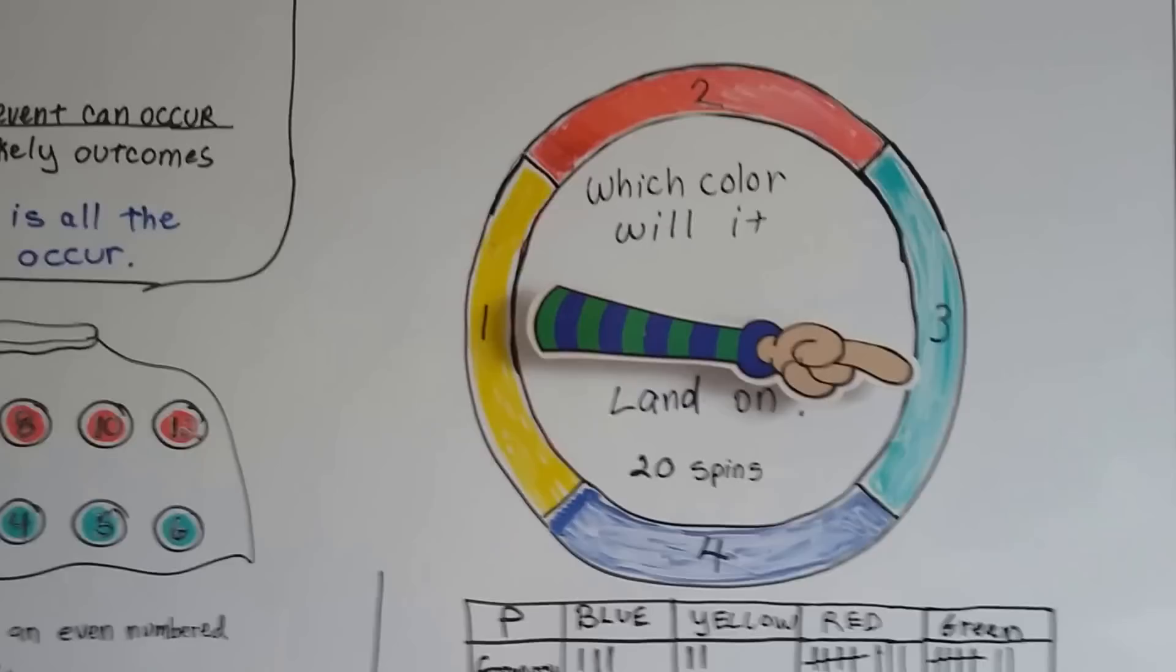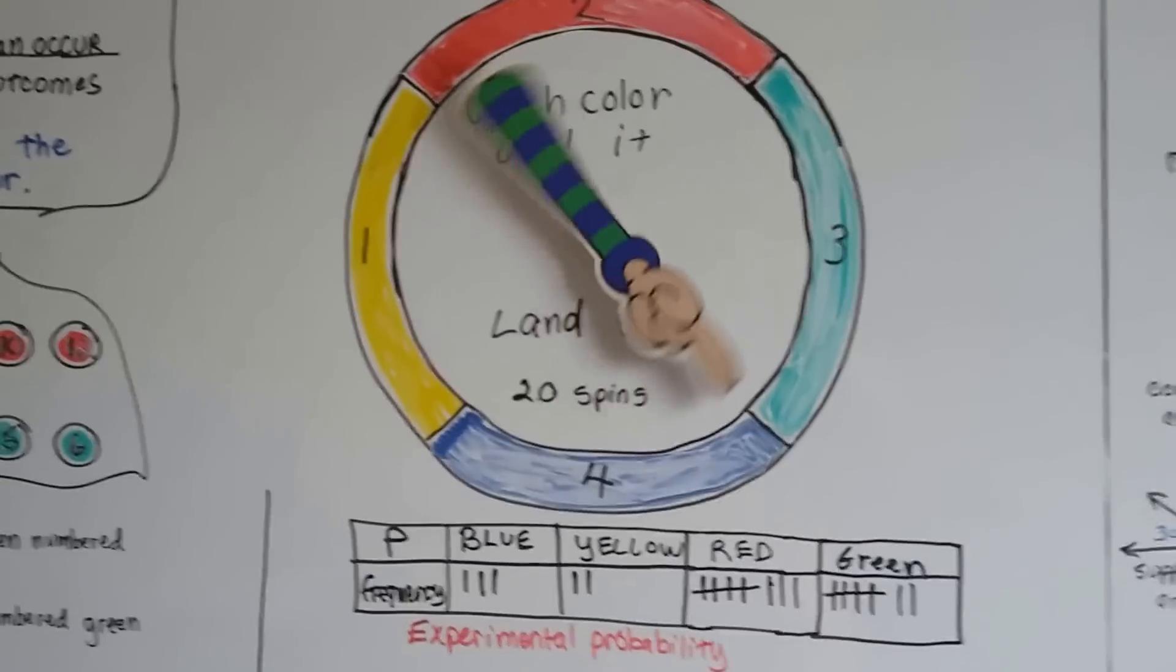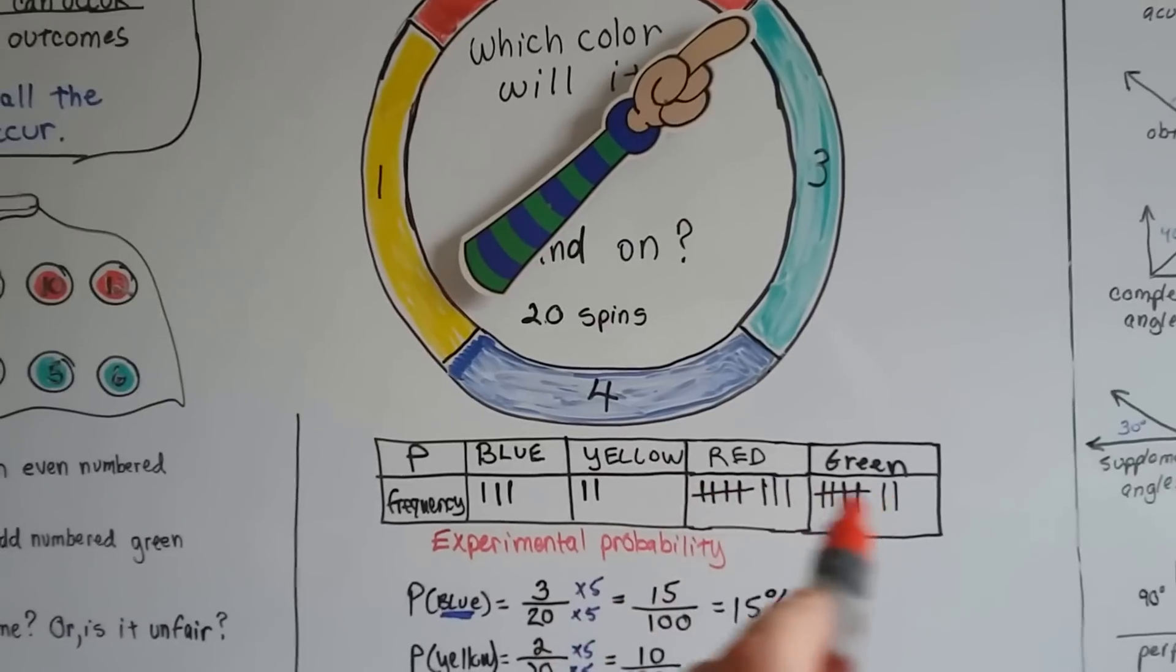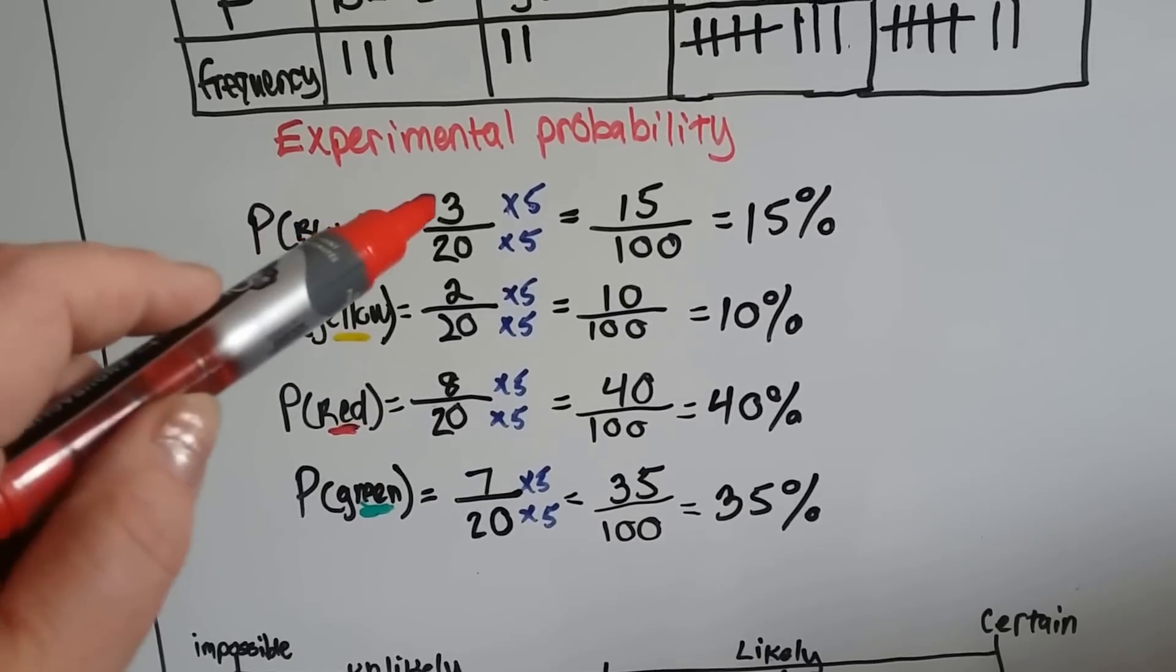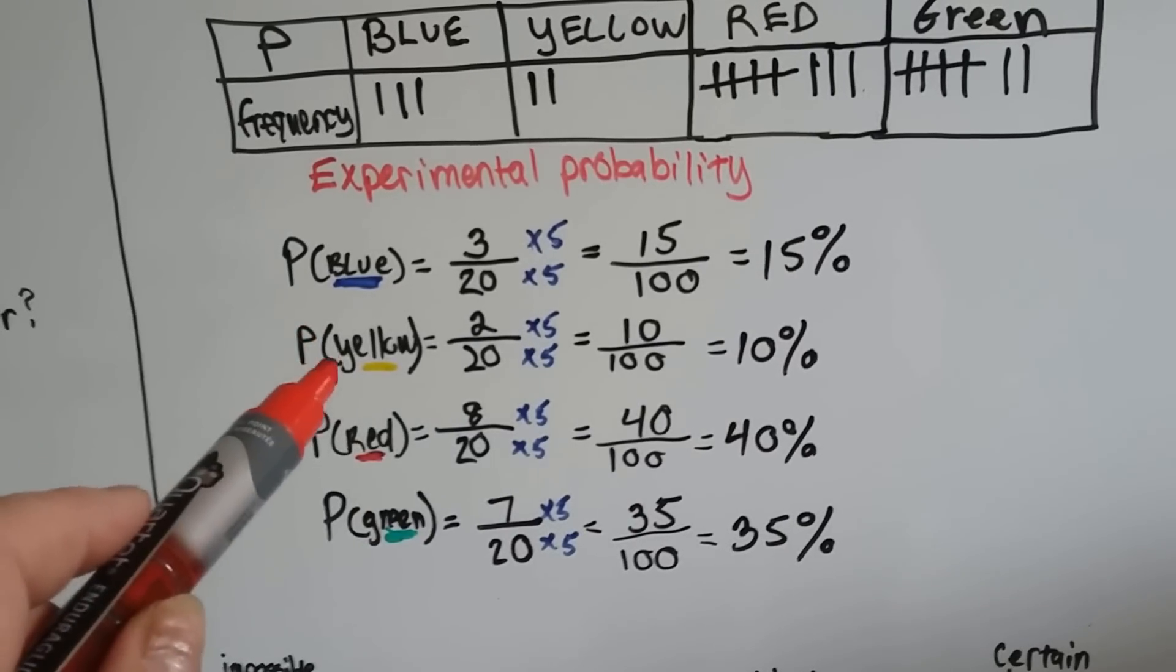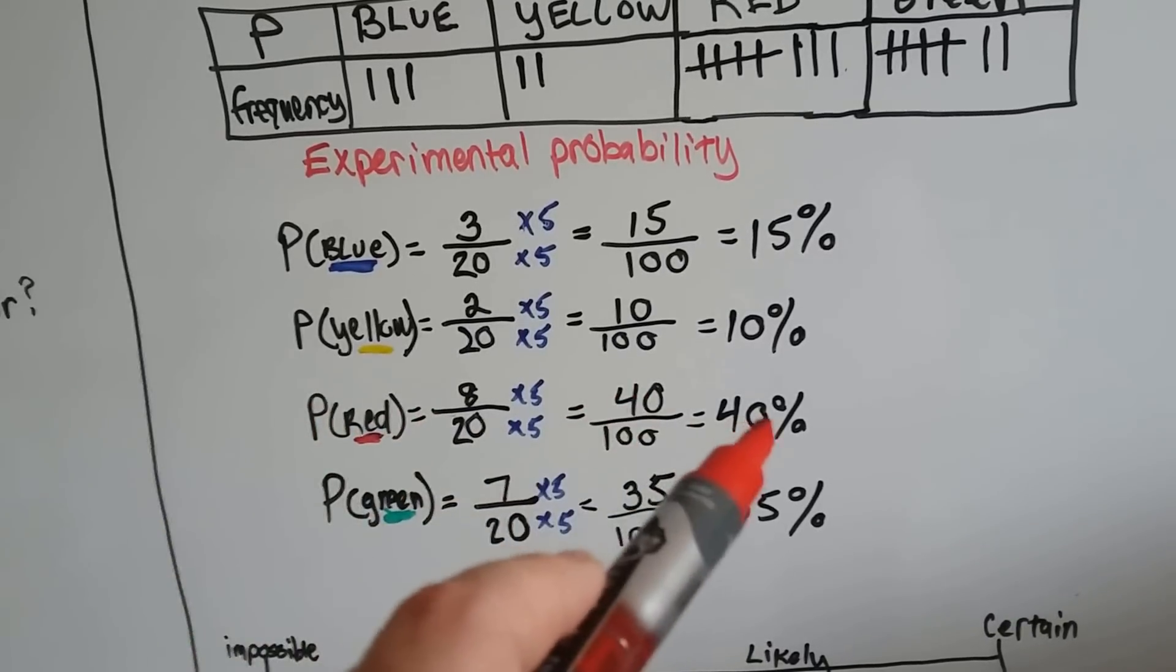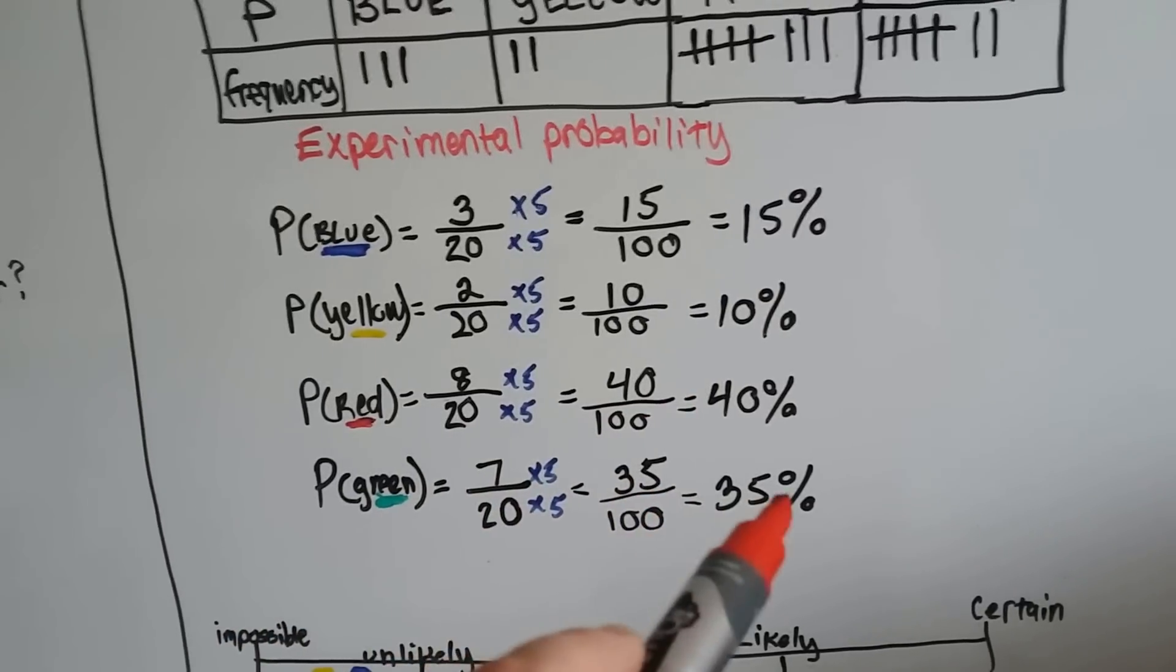So I have this spinner. It's a magnetic spinning arm that I can put on my board, and I can spin it. For experimental probability, I spun it 20 times. I tally marked how many times it landed on which color, and I figured the percentages. The probability that it landed on blue was three times out of the 20 spins, which is 15%. Yellow was two, so that's 10%. Red was 40%, and green was 35%.